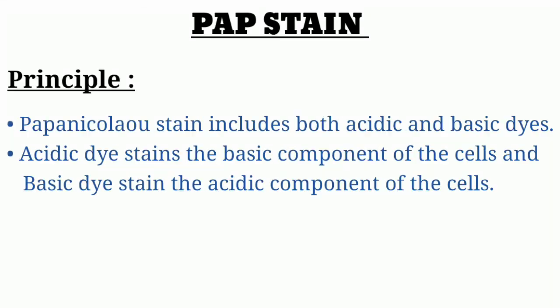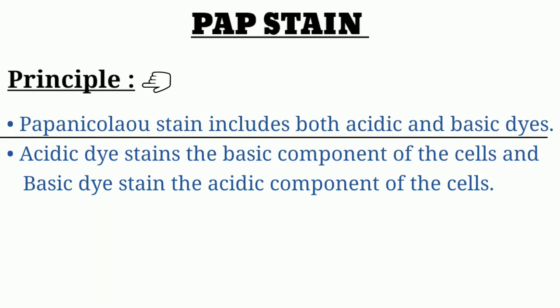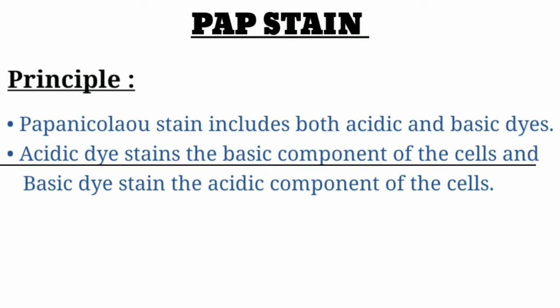Principle of Pap stain: Papanicolaou stain includes both acidic and basic dyes. The acidic dye stains the basic components of the cell — that is, the cytoplasm. The basic dye stains the acidic component of the cell — that is, the nucleus. So acidic dye stains cytoplasm, and basic dye stains the nucleus.